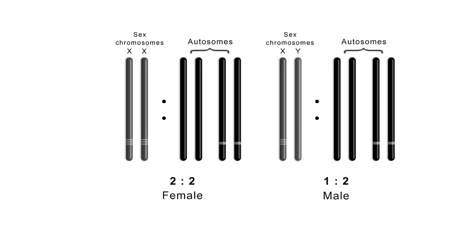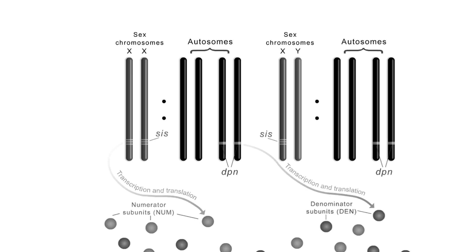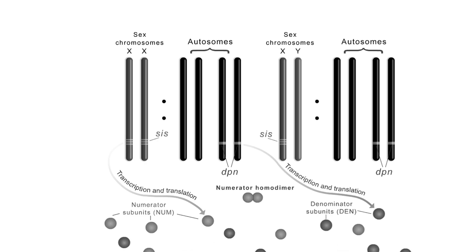The X chromosomes contain 3 numerator genes known as the sisterless genes: Sis-A, Sis-B, and Sis-C. An autosome carries the denominator gene called deadpan or DPN. The sisterless numerator genes are expressed to produce protein subunits that can either form homodimers with themselves, or heterodimers with the protein subunit produced from the deadpan denominator genes.